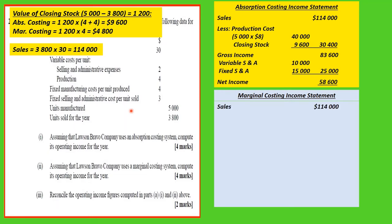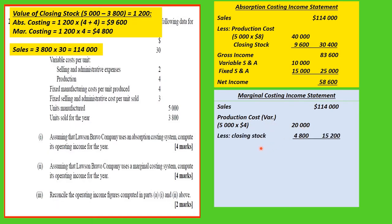Under marginal costing, the variable selling costs are $14,000. The production cost this time is 5,000 units by $4 — we only use the variable cost — giving $20,000. The closing stock is $4,800 as we calculated earlier, giving a product contribution margin of $98,800.